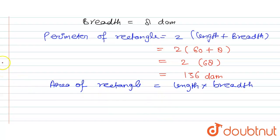So length is given as 60 and breadth is 8, so this will be equal to 60 into 8, equals 480 decameter square.